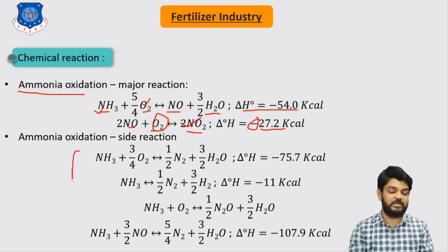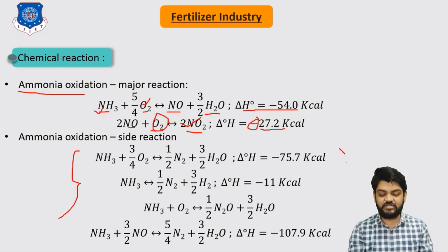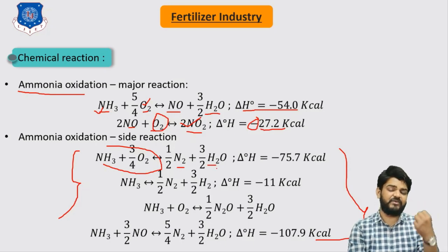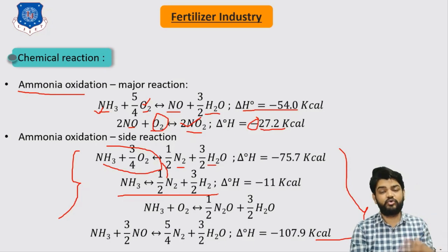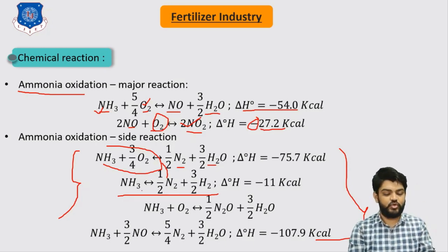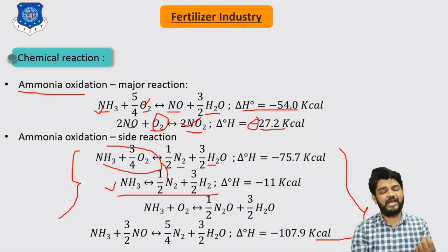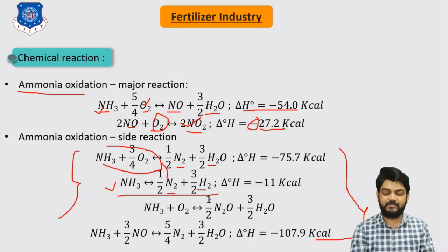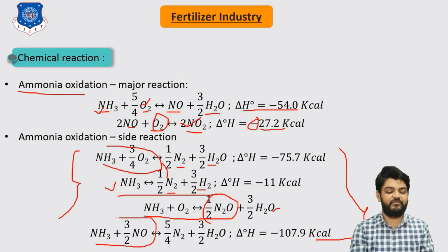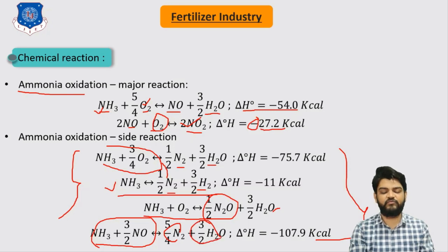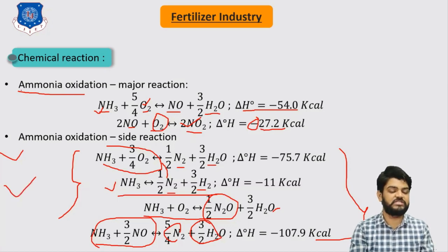Now moving to the side reactions, which are not that important from an exam point of view. In these, ammonia reacts with oxygen to produce nitrogen and water, but in very minor quantities. Ammonia also produces nitrogen and hydrogen in a reversible reaction — the opposite of the Haber process. A fourth side reaction involves ammonia and oxygen producing N2O and water. The last side reaction is ammonia reacting with the product NO to produce nitrogen and water.